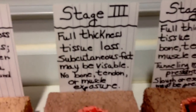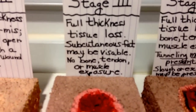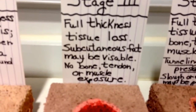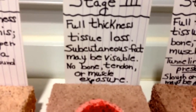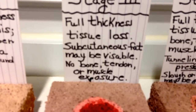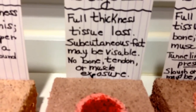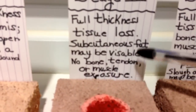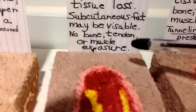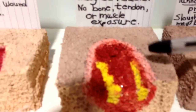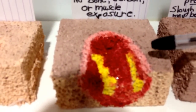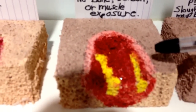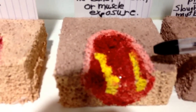Now let's take a look at a stage three wound. In stage three, we now have a full thickness of tissue loss, including subcutaneous fat, which may be visible. But the key thing is in stage three, there is no bone, tendon, or muscle exposure. Remember, the skin has the epidermis, the dermis, and the subcutaneous fatty layer, and then you reach the muscles and eventually the bone.